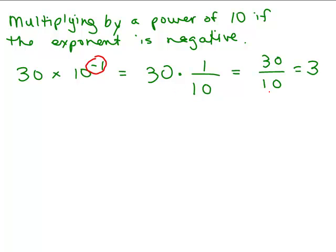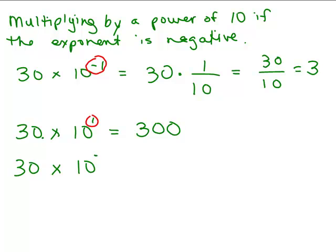So 30 times 10 to the negative 1 is the same thing as 30 divided by 10 to the positive 1. When you divide by 10, the decimal moves one place to the left. Remember when we did 30 times 10 to the first, the decimal moves one to the right. If I do 30 times 10 to the negative 1, I move the decimal one to the left because I'm getting a smaller number — multiplying by a negative exponent is like dividing — and our answer is 3.